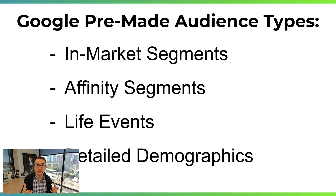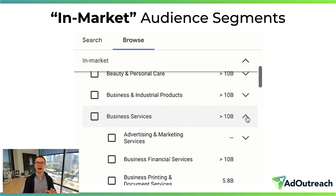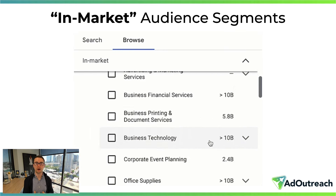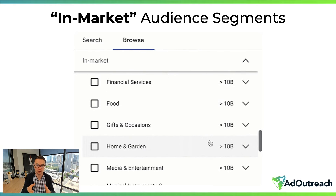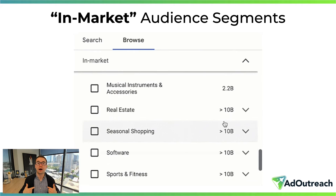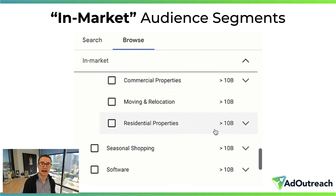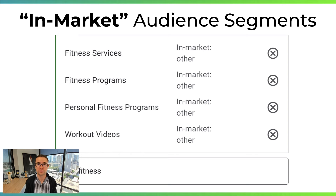Google has already created pre-made audiences you can target your ads in front of: in-market segments, affinity segments, life events, and detailed demographics. For in-market audience segments, there's a wide variety you can target based on who your ideal clients are — what Google and YouTube knows about people in the market for exactly what you do. For example, if you're a weight loss or nutrition coach, you could target people in-market for fitness services, fitness programs, personal fitness programs, or workout videos.